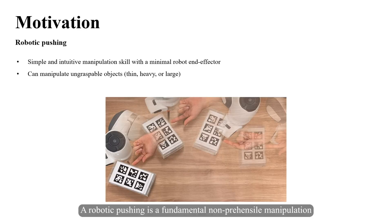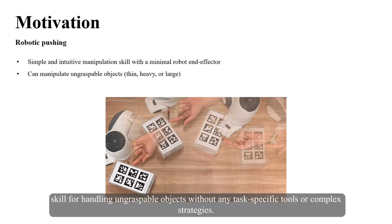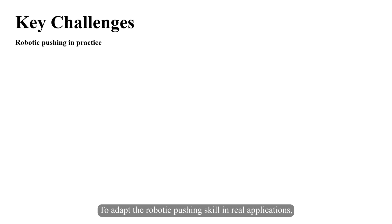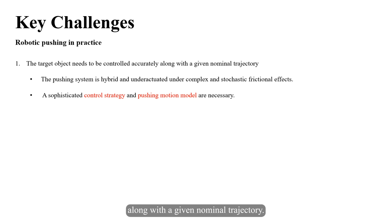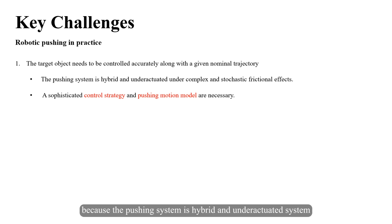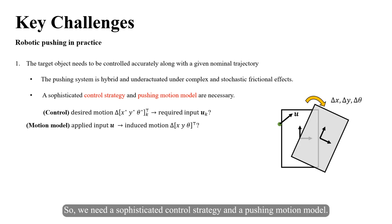Robotic pushing is a fundamental non-prehensile manipulation skill for handling ungraspable objects without any task-specific tools or complex strategies. The target object needs to be controlled accurately along a given nominal trajectory, which is the main objective and challenge in the robotic pushing field because the pushing system is a hybrid and under-actuated system under complex and stochastic frictional effects. Therefore, we need a sophisticated control strategy and a pushing motion model.